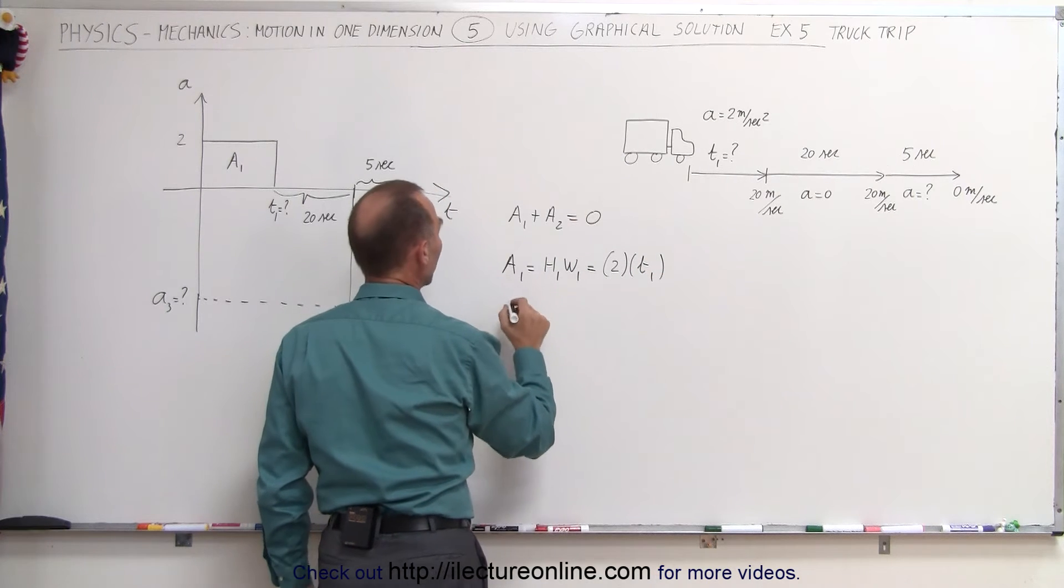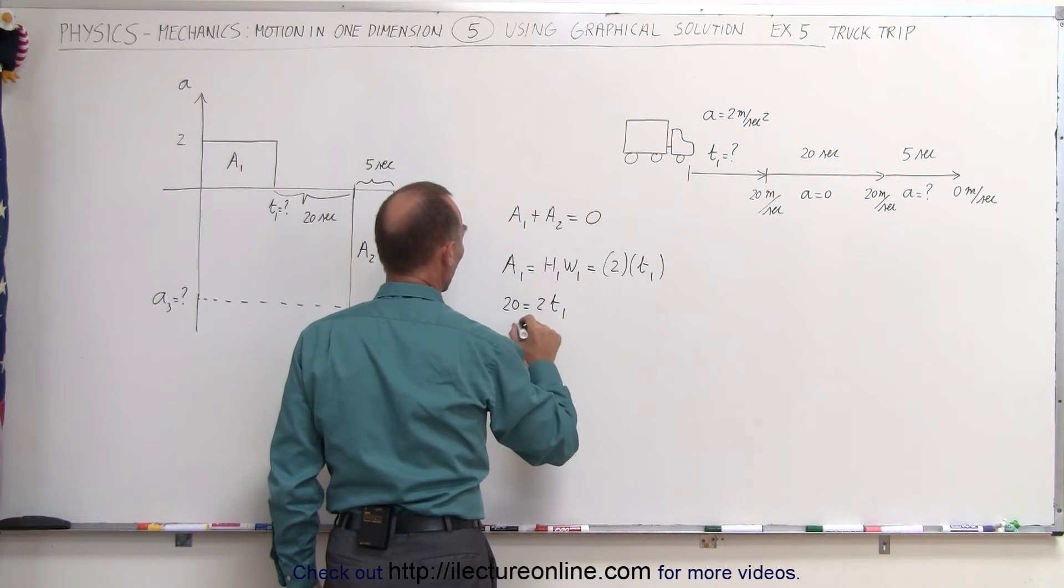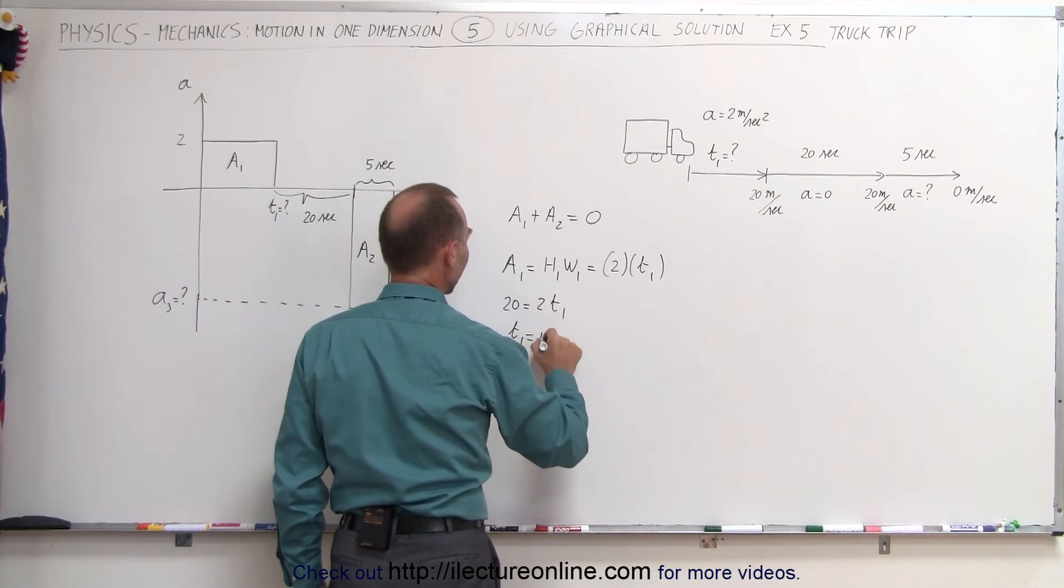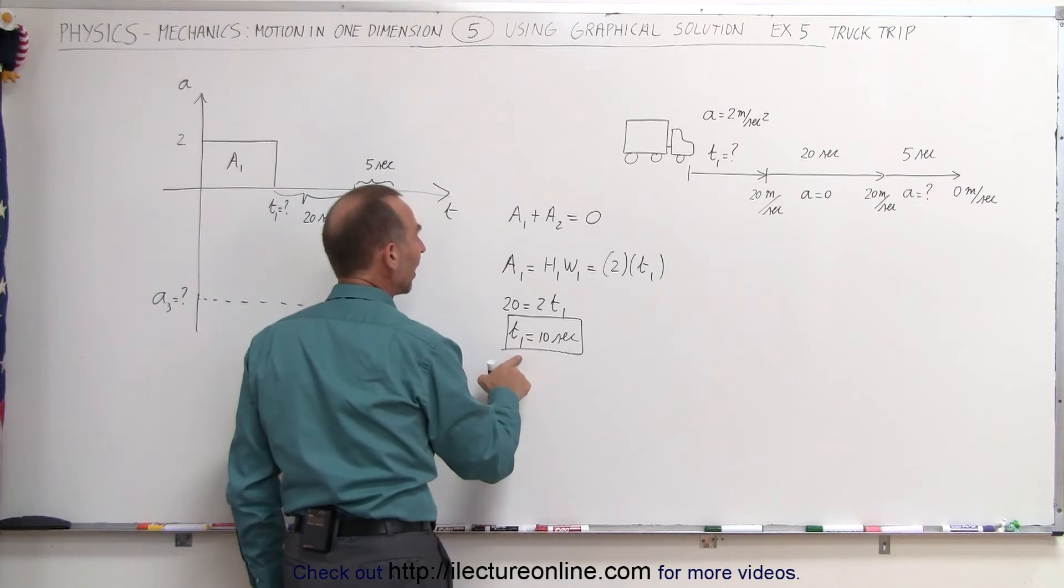And of course a1 is equal to 20 so we can say that 20 equals 2t1, or divide both sides by 2, t1 is equal to 10 seconds. So that's how we find the time.